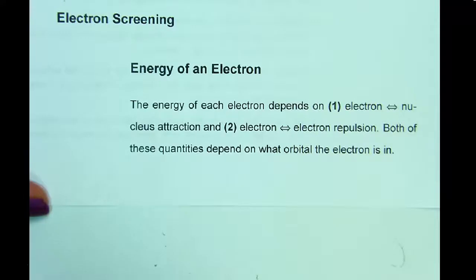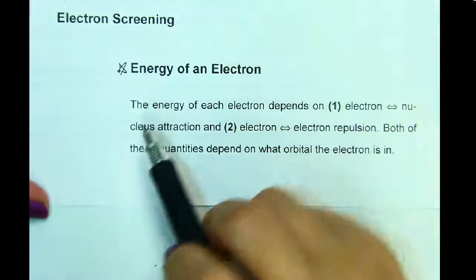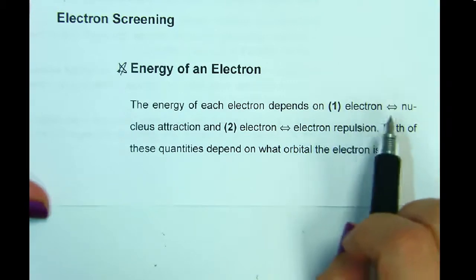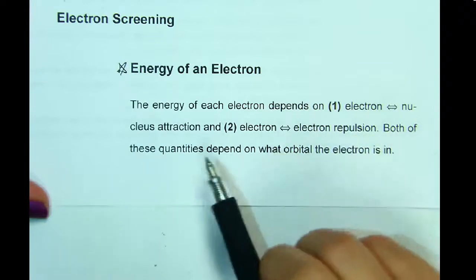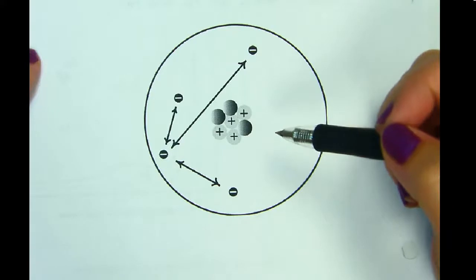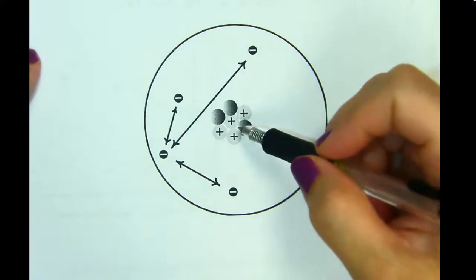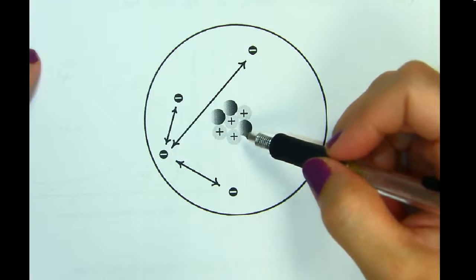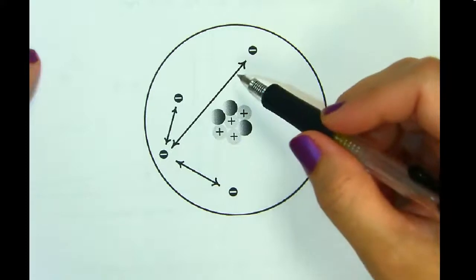Electron screening focuses on the energy of each electron. The energy of each electron depends on the electron-nucleus attraction and the electron-electron repulsions, both of which depend on what orbital the electron is in. The effective nuclear charge, or ZEF, is the net average electron-to-nucleus attraction. ZEF characterizes the average nuclear charge an electron feels, including the average effects of all electron-electron repulsions.